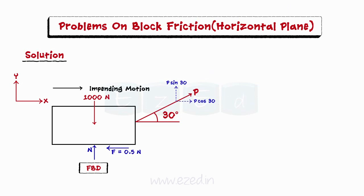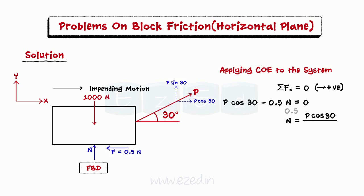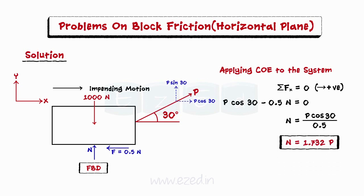Now we will apply conditions of equilibrium to the system. We will first equate the summation of all forces in the x direction to 0. Thus, we will be able to find an equation which gives us a relation between the normal reaction and the applied force.